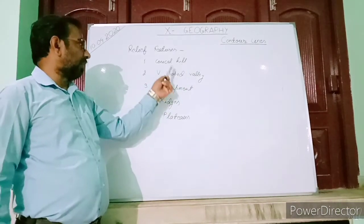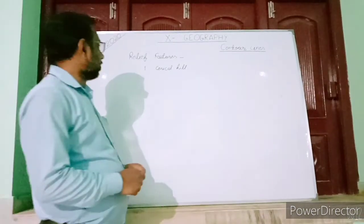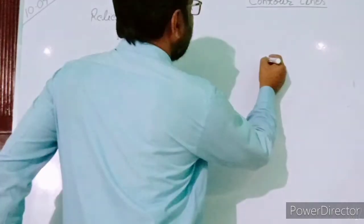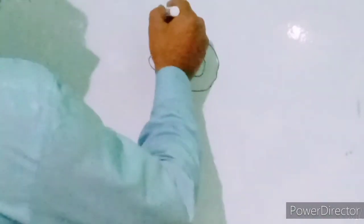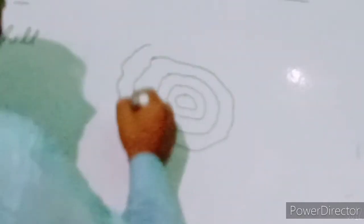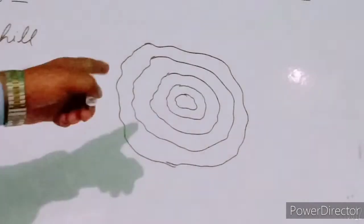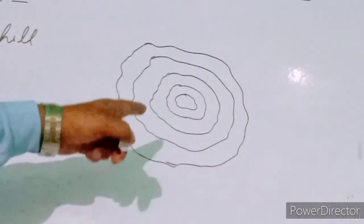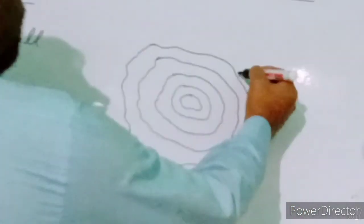One by one we will see the pattern of contour lines for each relief feature. The first relief feature is the conical hill. In the middle there is a circular region, and around this circular region we have lines of contours drawn at equal intervals of distances. This type of pattern of contour lines represents the conical hill on the topo sheet.